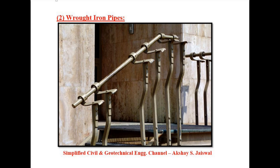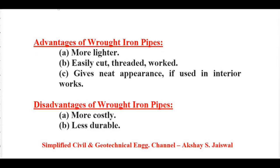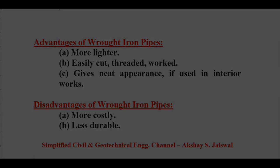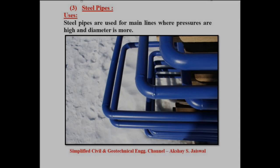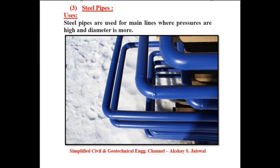Next type is wrought iron pipes. Advantages: wrought iron pipes are lighter, easily cut, threaded and worked, and they give a neat appearance if used in interior works. Disadvantages: these pipes are more costly and less durable.